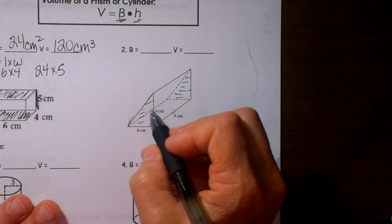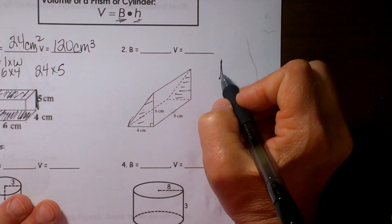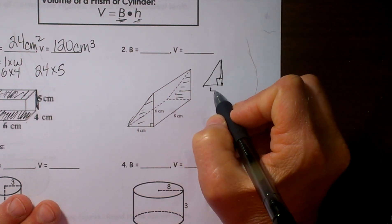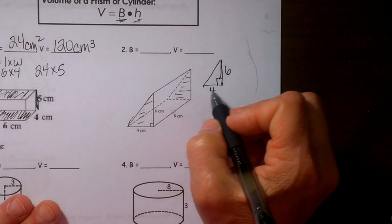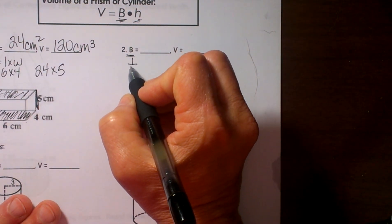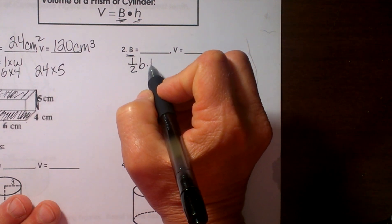So now I am going to take this triangle and draw it over here. It is a right triangle with a base of 4 and a height of 6. So what is the area of a triangle to find the base area? The triangle's formula is 1 half base times height.